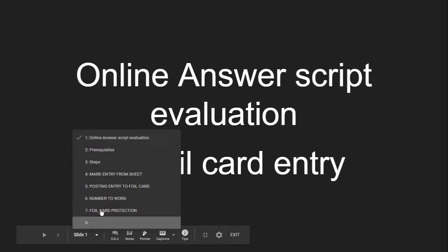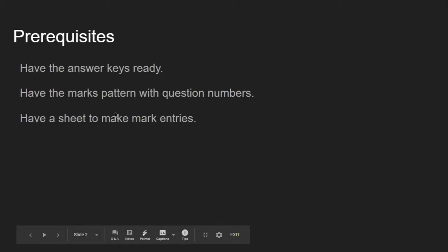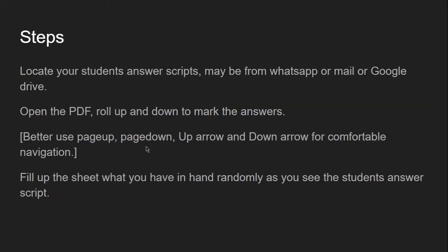Initially, as usual with regular evaluation, just have the answer keys ready with question numbers, corresponding answers, and marks. For big answers, have the question numbers and mark patterns. Also have an Excel sheet with all the register numbers and question numbers so that we can make the entry. Once you roll up the PDF, open the Google Drive where the answer scripts are stored, scroll up and down to read the answers, and mark them in the sheet so that we can enter them correctly for the corresponding questions.